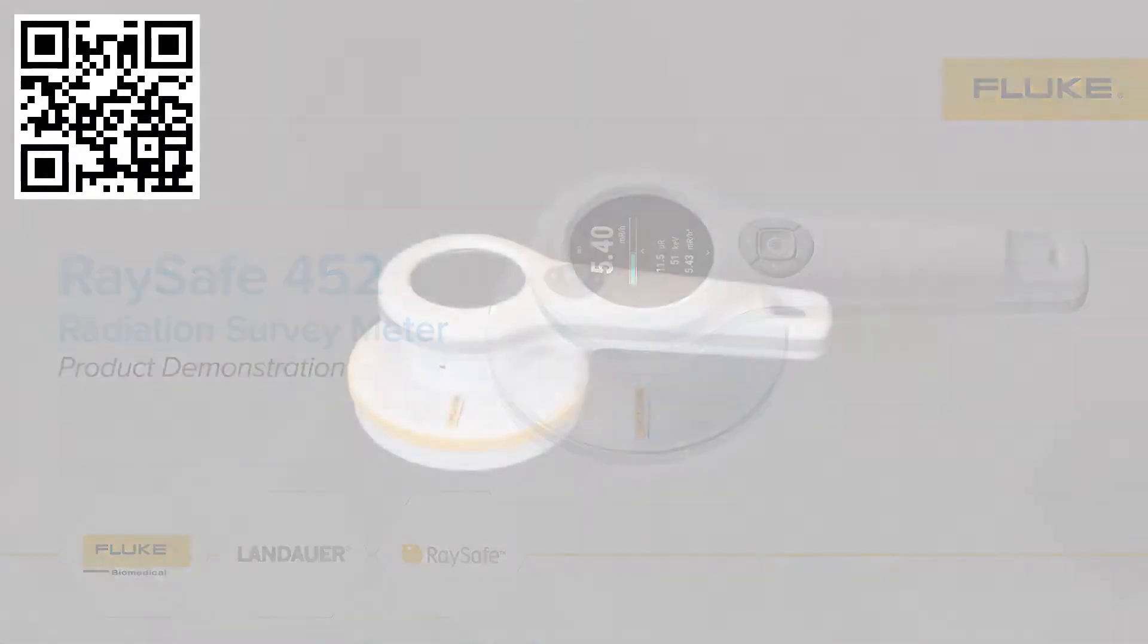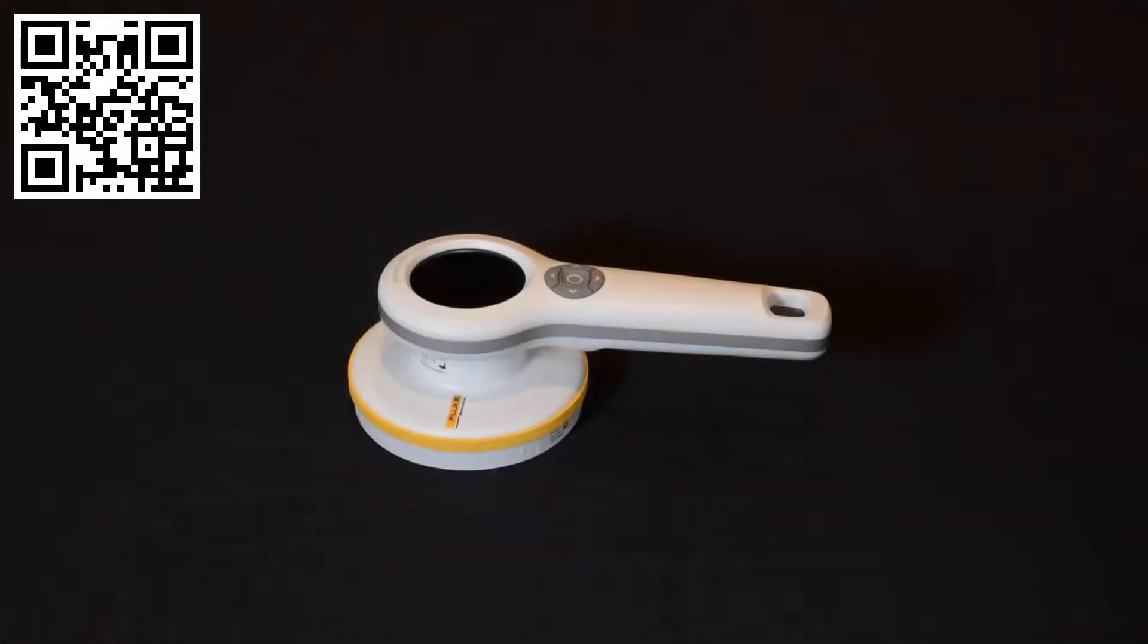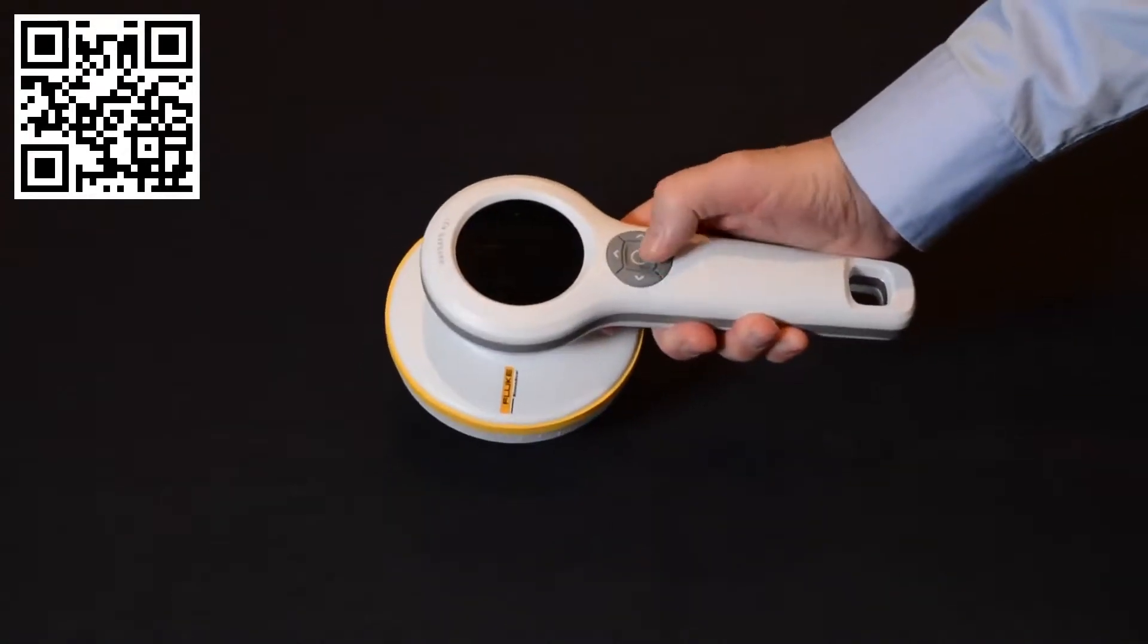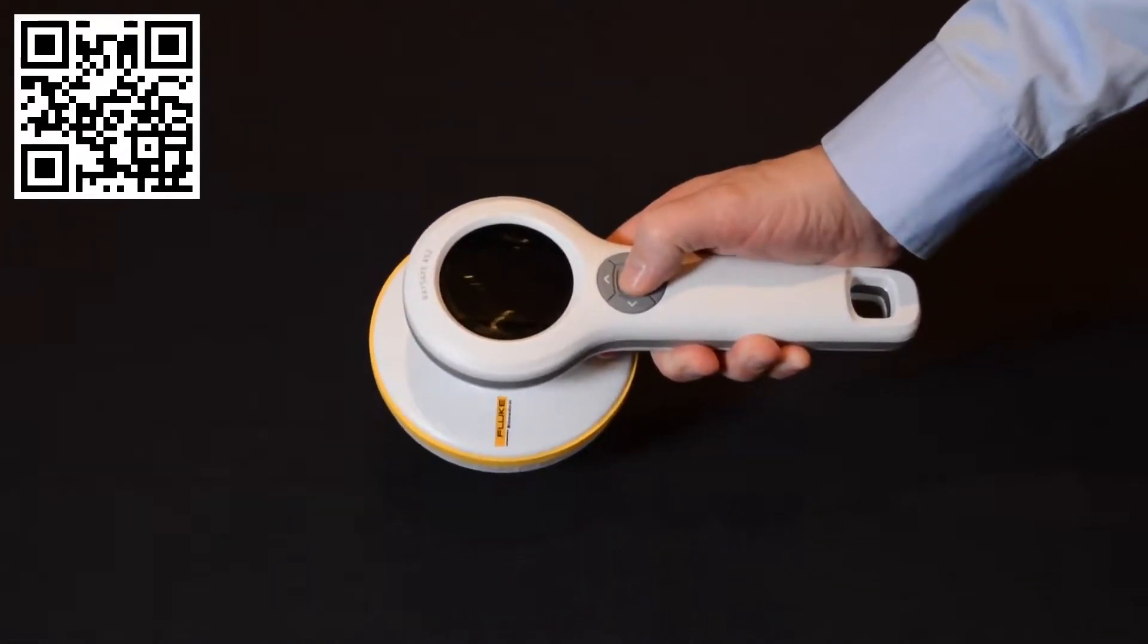This is the Raysafe 452, a new innovative survey meter that is designed to capture radiation in multiple ways with different definitions. This instrument is designed based on what you need as a user and not by the properties of the technique or application.